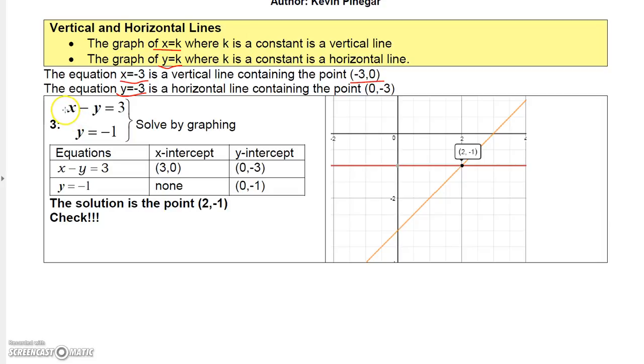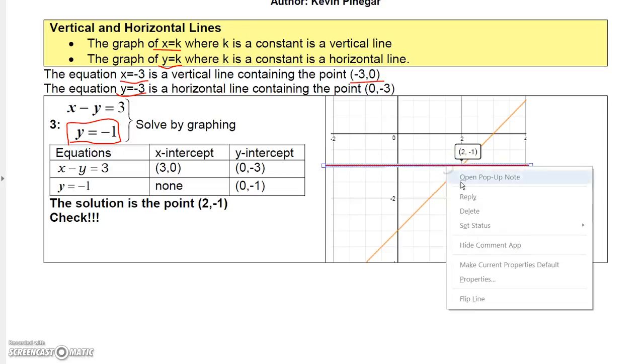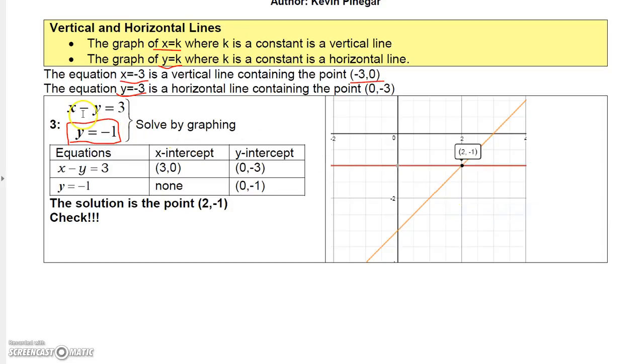So down here, you'll see I have two equations, x minus y equals three and y equals negative one. Well, let's focus on y equals negative one. That's actually a horizontal line here. You can see that it's just a horizontal line that goes through negative one. So that's the graph of that line. And then you can graph the other line by just plotting the x and y intercepts. And you'll see that when you graph these two lines, obviously the y value has to be negative one because it has to satisfy the second equation. But the x value is where they intersect and they intersect at x equal two. So the solution there would be the point two negative one.